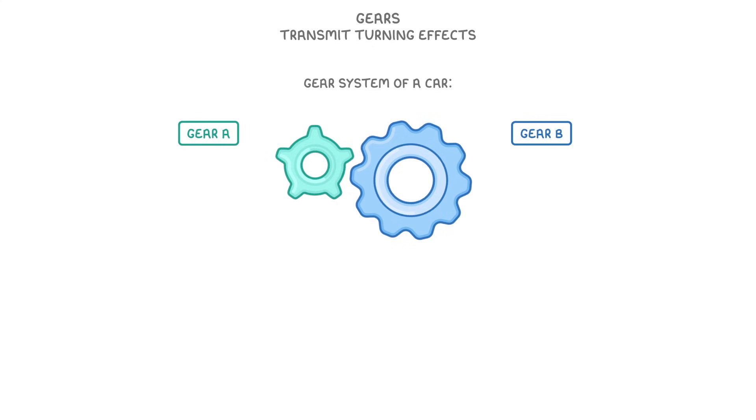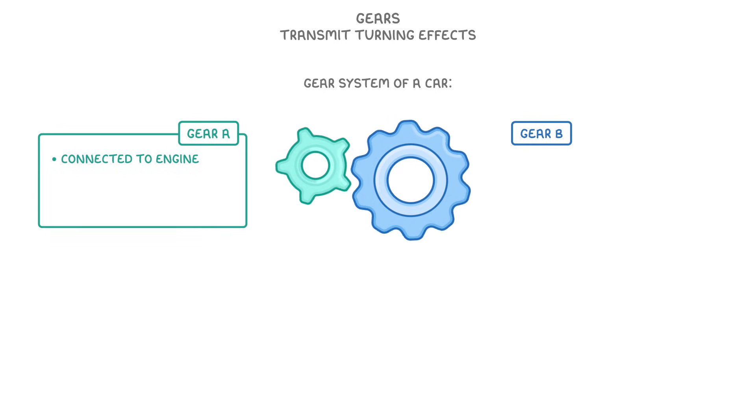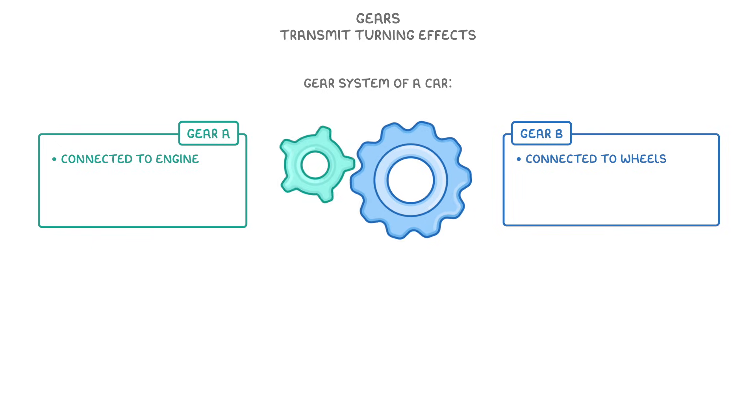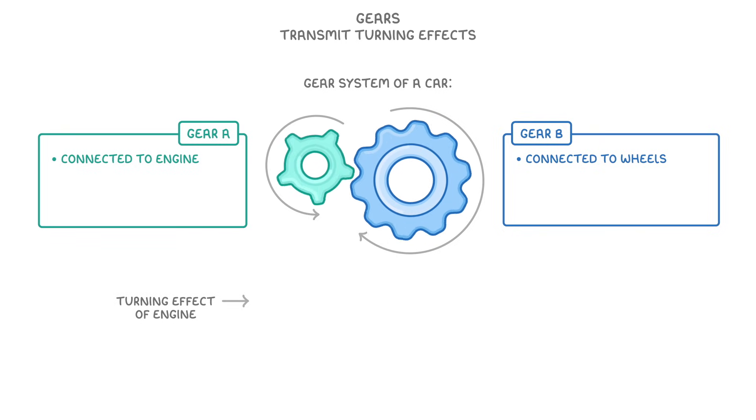Although it's nowhere near this simple in real life, let's imagine that the gear system of a car involves two gears, which we'll call gear A and gear B. Gear A is connected to the engine, which provides it with a turning force so that it rotates. Meanwhile gear B is connected to the wheels. So if gear B rotates, then the wheels will rotate as well. Because the two gears are interlocking, any rotation of gear A will cause gear B to rotate as well. So effectively, the gear system allows the turning effect of the engine to be transmitted to the wheels, because the engine rotates gear A, which in turn rotates gear B, which in turn makes the wheels rotate.